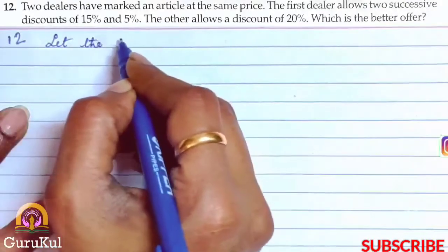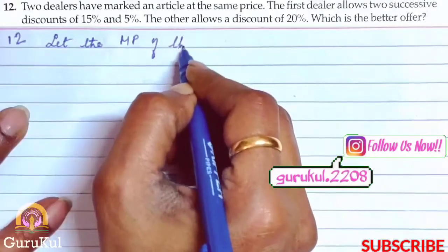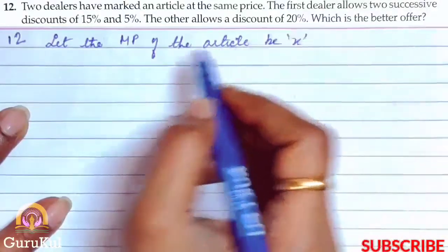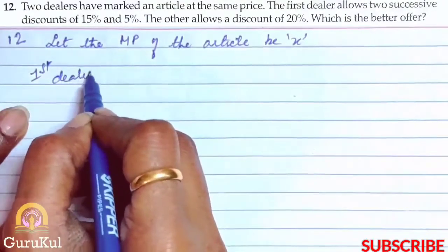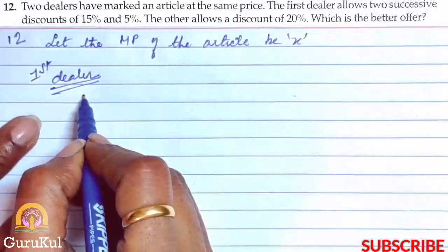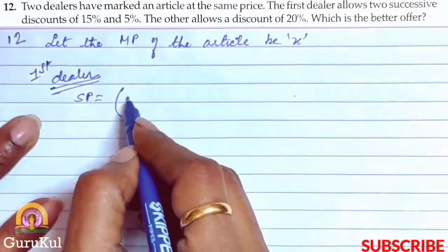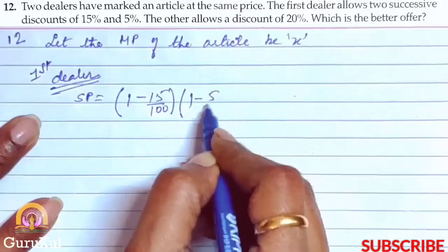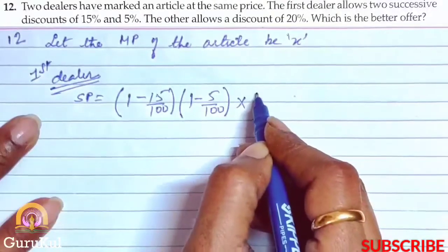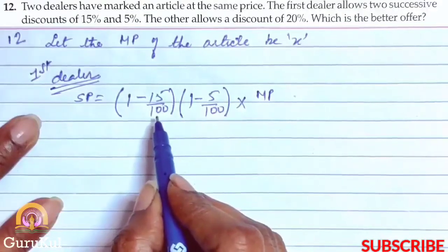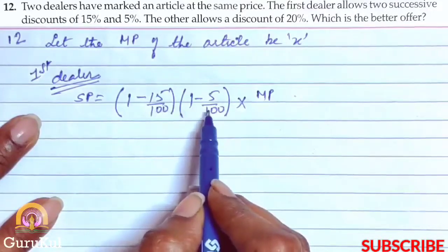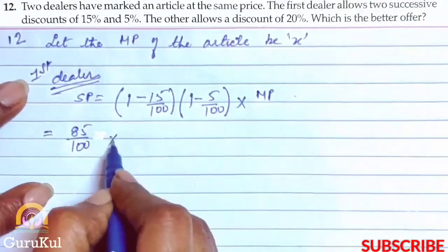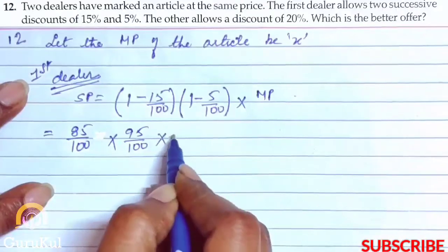Let the marked price of the article be x. For the first dealer, the SP formula with successive discounts applies: SP = (1 minus 15/100) into (1 minus 5/100) into MP. After simplification, this becomes 85/100 into 95/100 into x.